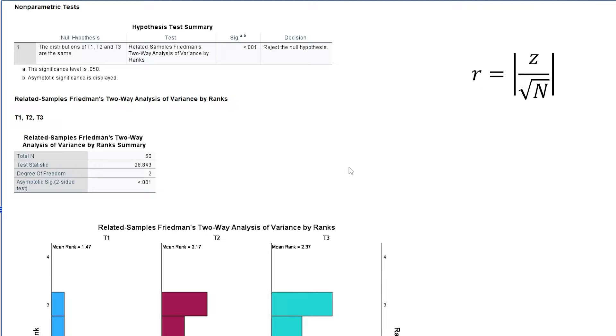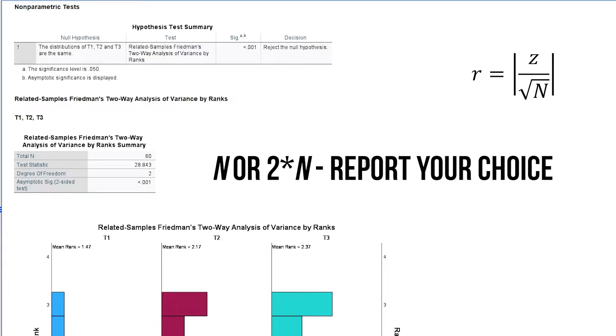Both numbers are provided within the output of the Friedman test. Total N is the number of paired observations and can be found at the top of the test summary table. Please note that some sources will not use the number of pairs for N but rather the number of pairs times 2.